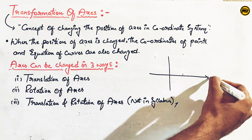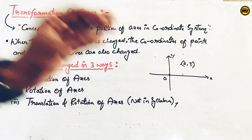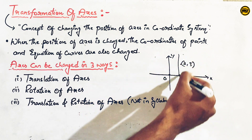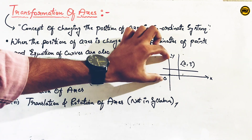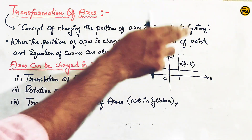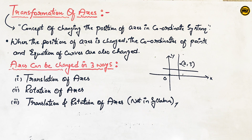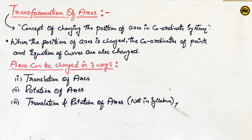Now, if we take the x-axis and y-axis, we take the origin. For suppose, we take one point — 2, 3. This is the original point. If we change the axis in the coordinate system and change the position, the coordinates change and the equations change. We change the axis in three ways.